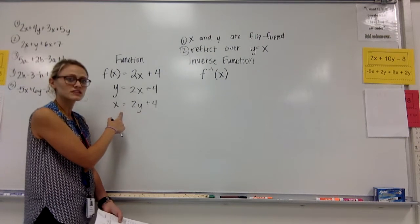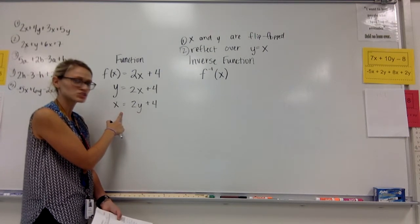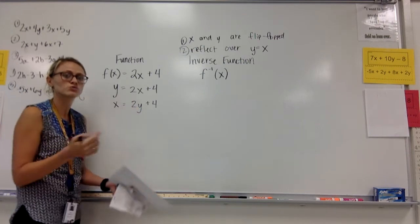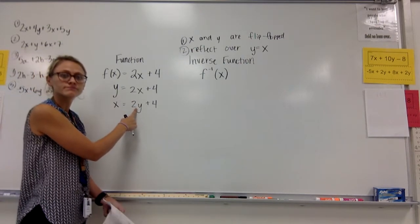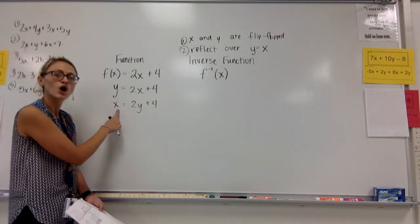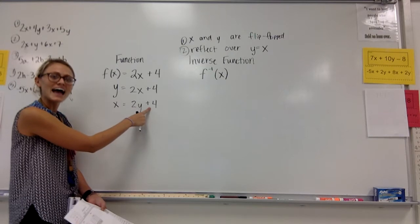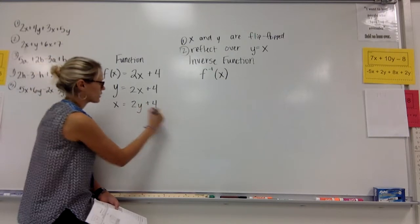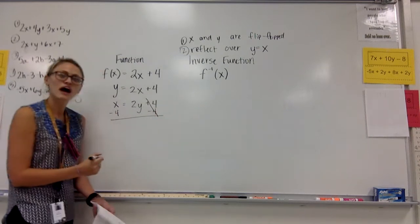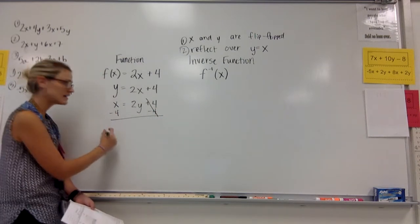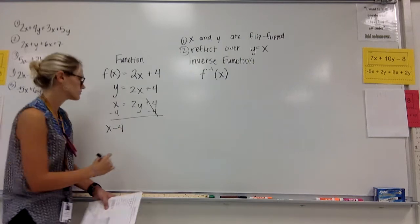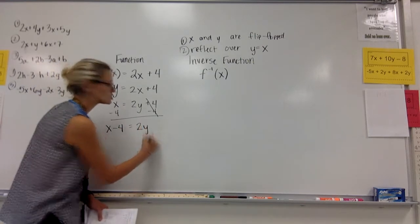So I've now got x equals 2y plus 4. You can't graph this, though. This is not a graphable function. The y has to be by itself. Now, we do that by simply solving for y. So I need the y by itself. I'm going to move this 4 over. It's being added, so I'm going to subtract it. Now I've gotten rid of that 4 on this side.